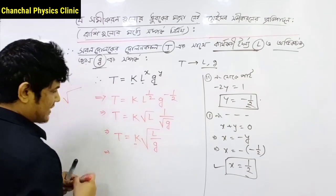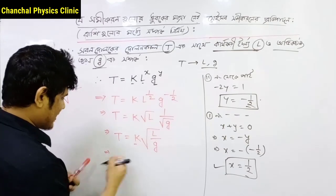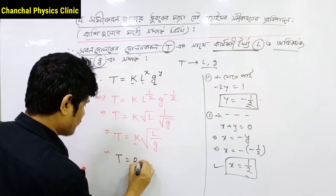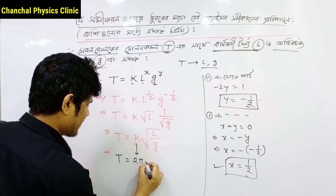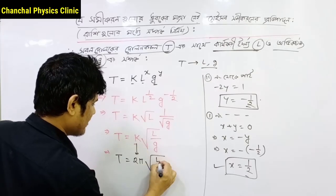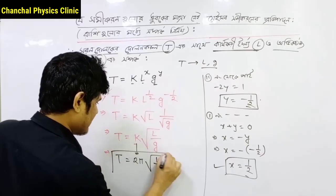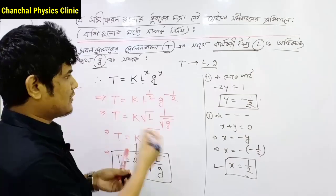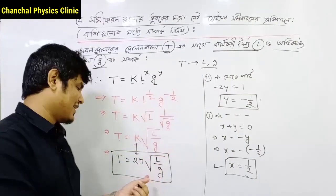Now you can see the constant. This constant means 2 pi. So the formula becomes 2 pi times root of L by g. The constant here is 2 pi, and there we have to consider the object in question.